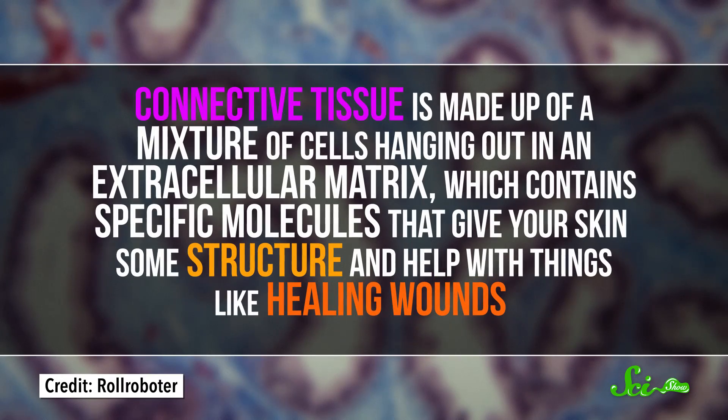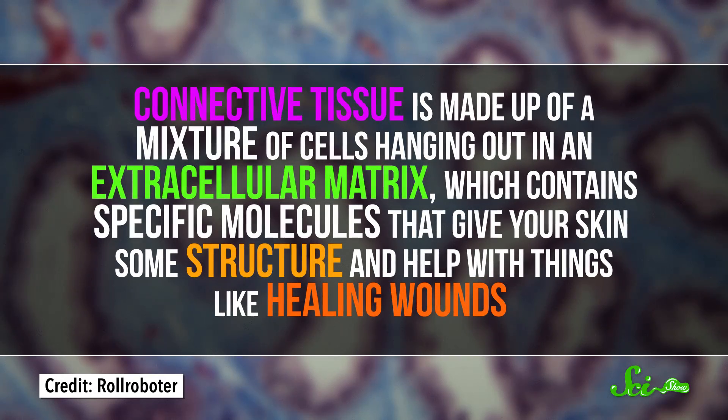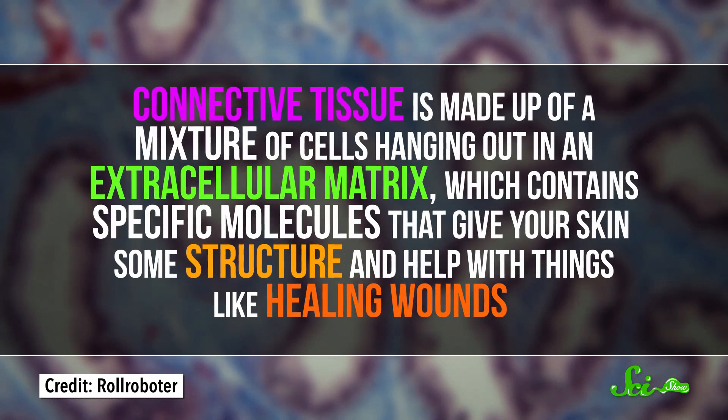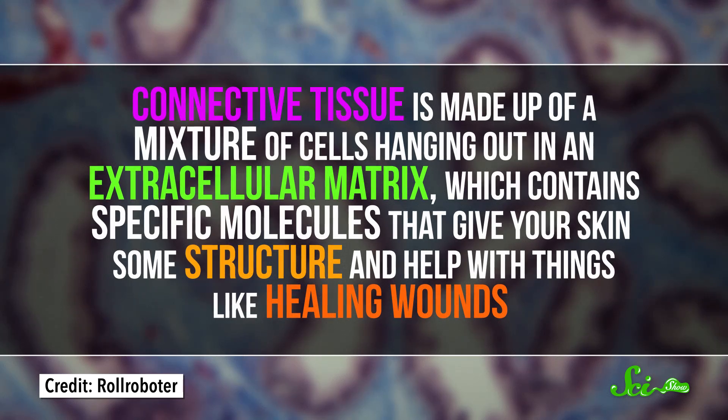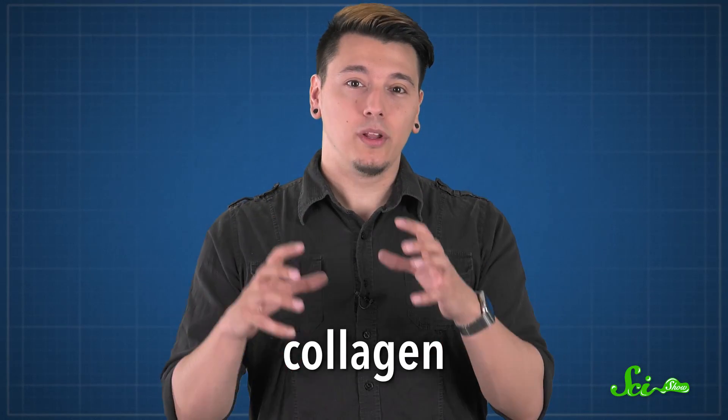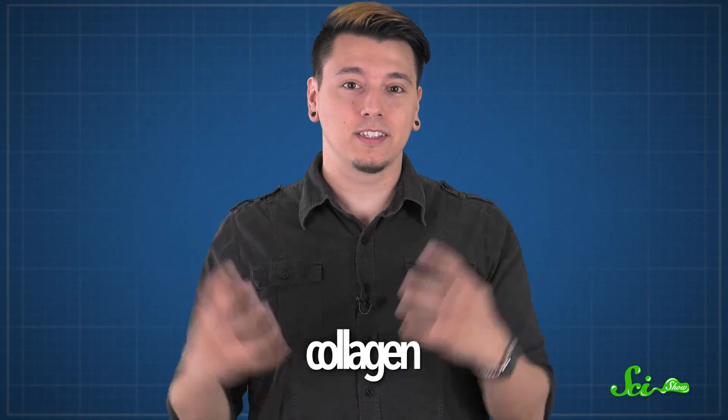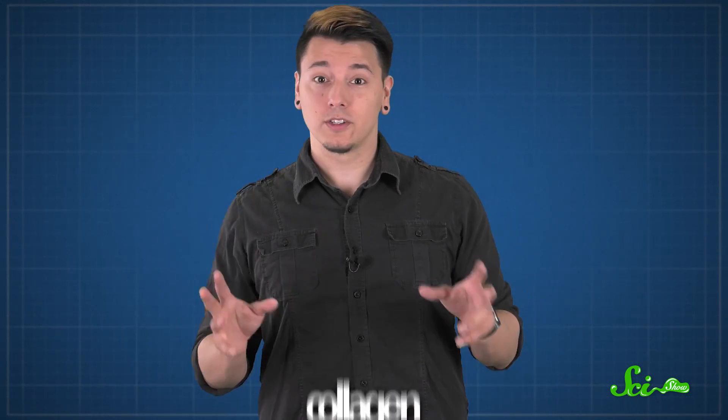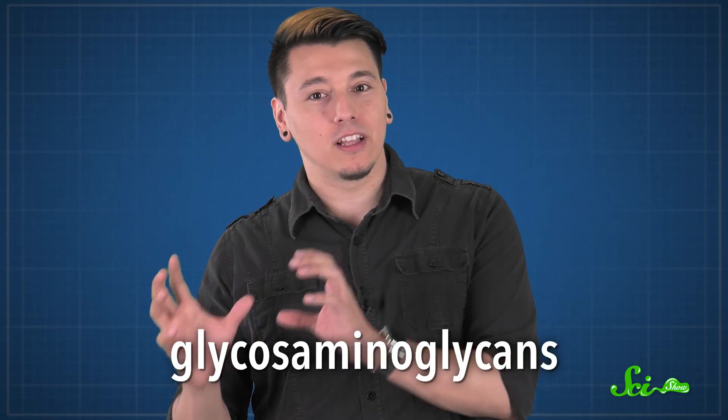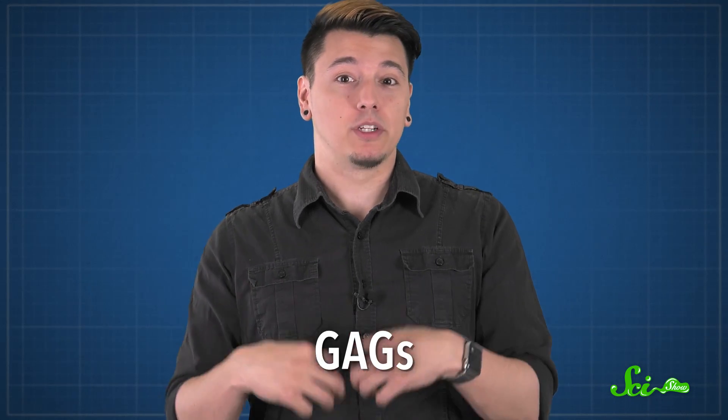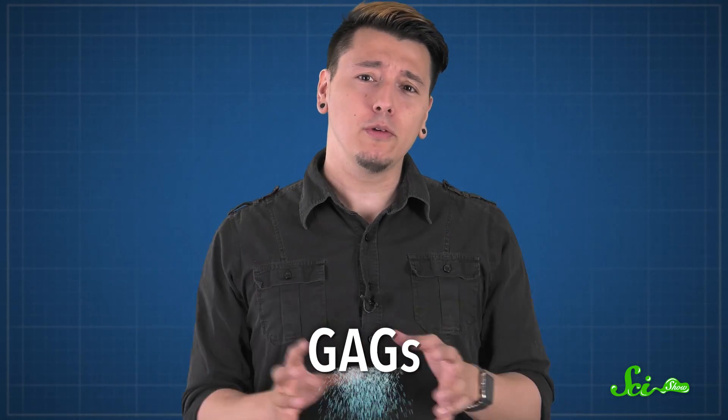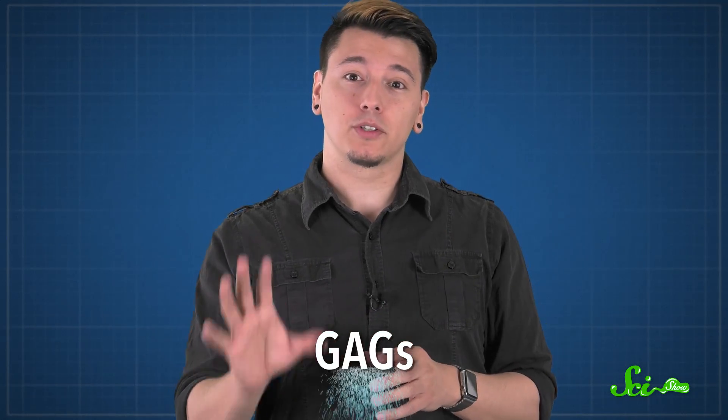Connective tissue is made up of a mix of cells hanging out in an extracellular matrix, which contains specific molecules that give your skin structure and help with things like healing wounds. One is collagen, a really plentiful protein that helps cells stick together and makes your skin stronger. There's also elastin, a protein that gives your skin the ability to bounce back when you stretch it. Then there are long chains of sugars called glycosaminoglycans, or GAGs, which act like sponges and can hold huge amounts of water. They help resist squishing forces on your skin and keep it hydrated and healthy-looking.